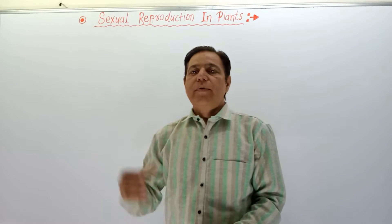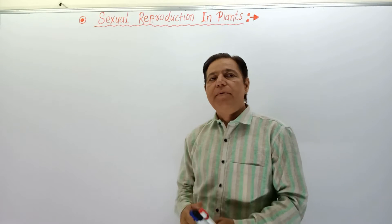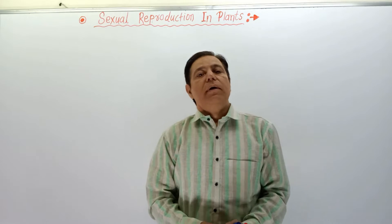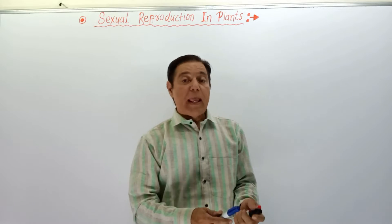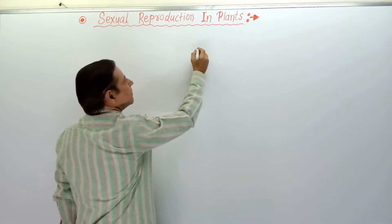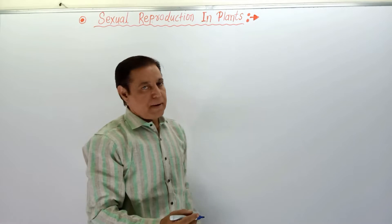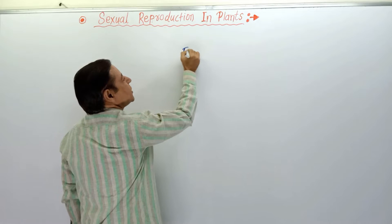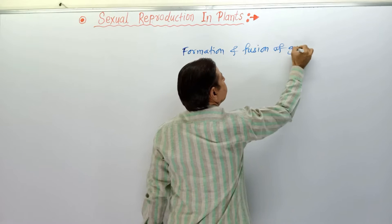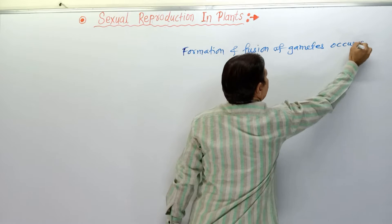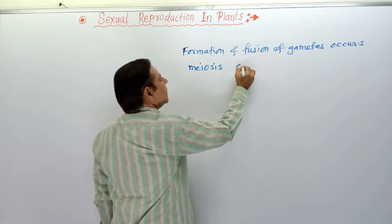Hello everybody. In this video we will study about sexual reproduction in plants. In the previous lecture, we learned about asexual methods of reproduction in plants. Now about sexual reproduction — as we know, sexual reproduction is the most common method of reproduction among higher plants, in which formation and fusion of gametes occurs, and for that meiosis is very essential.